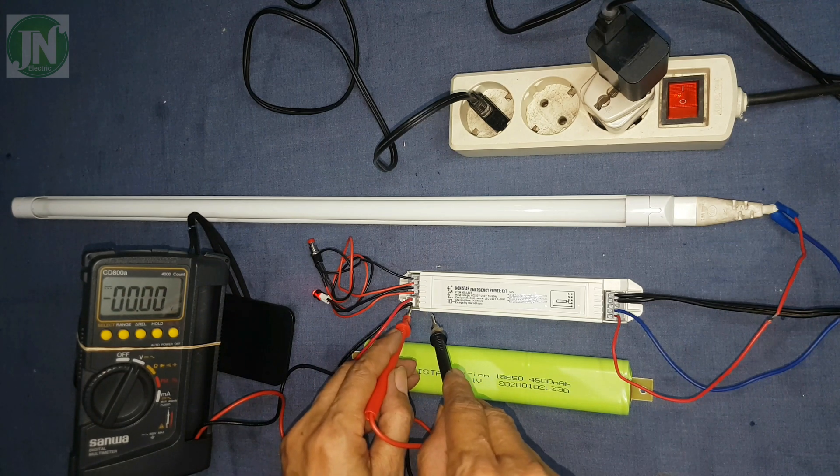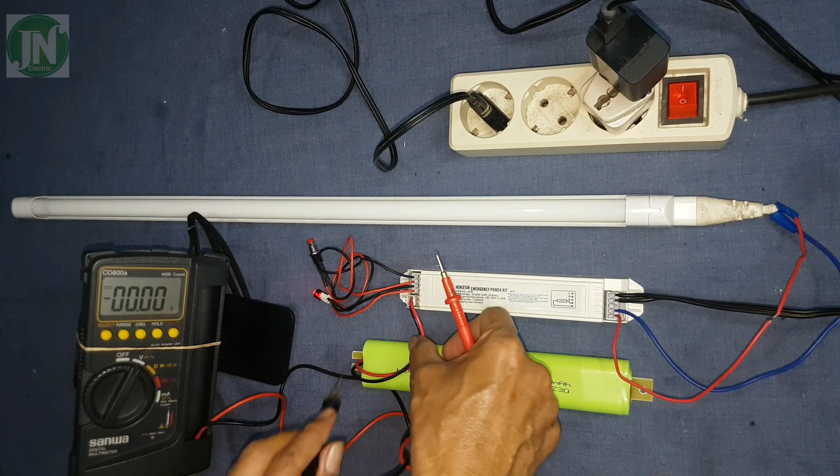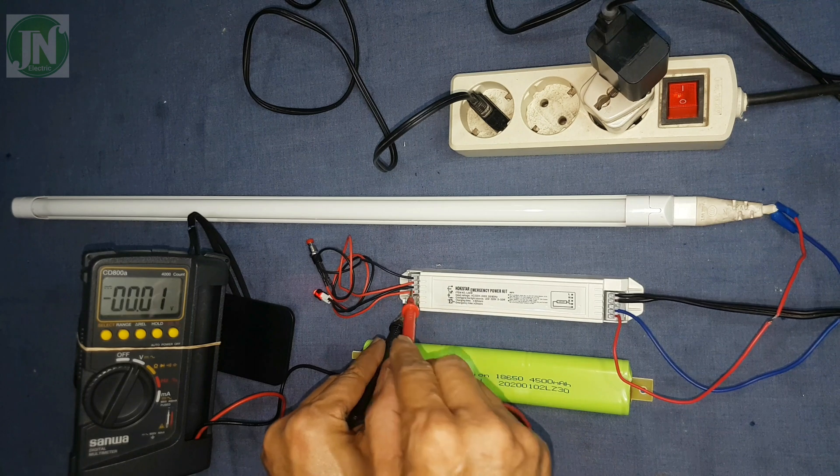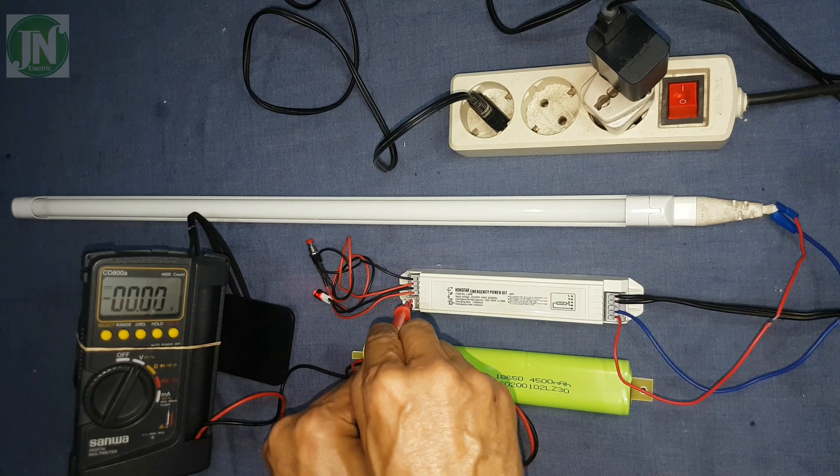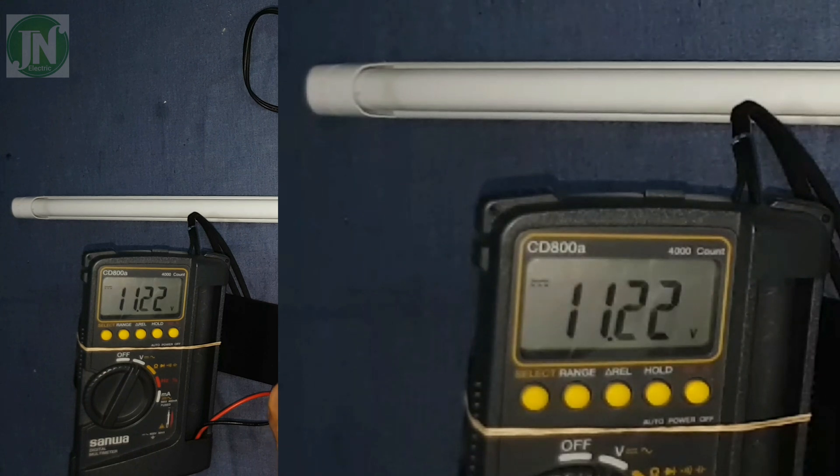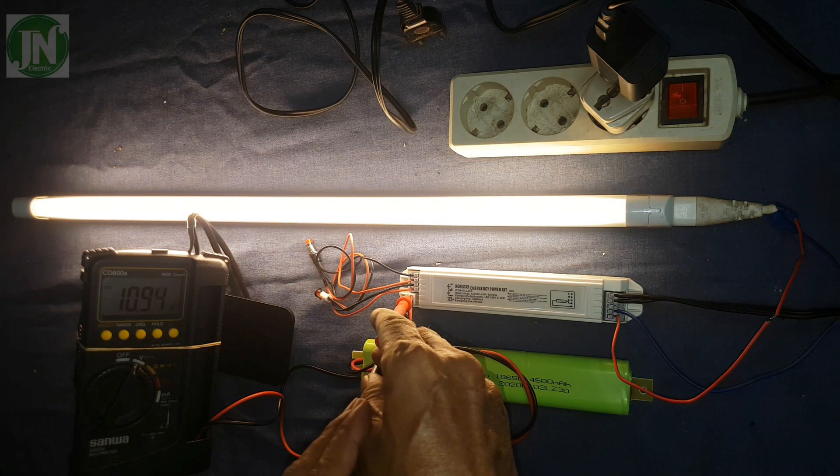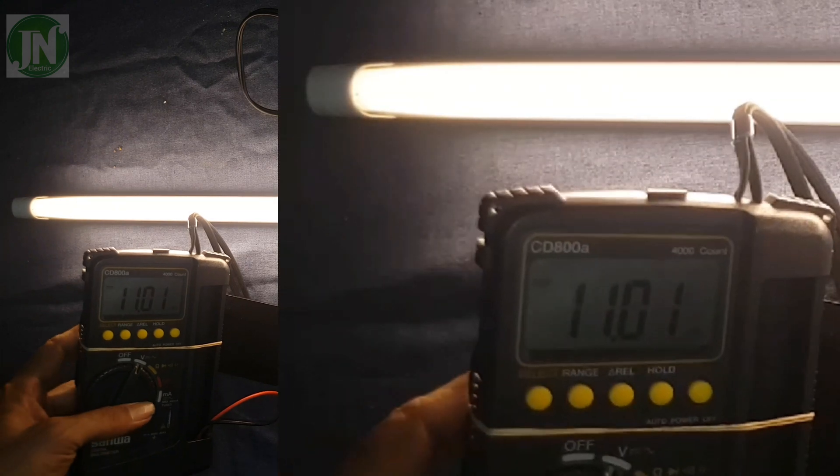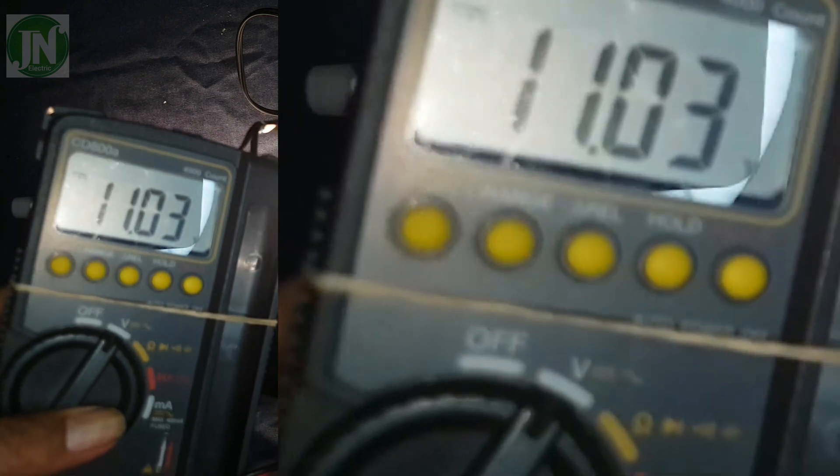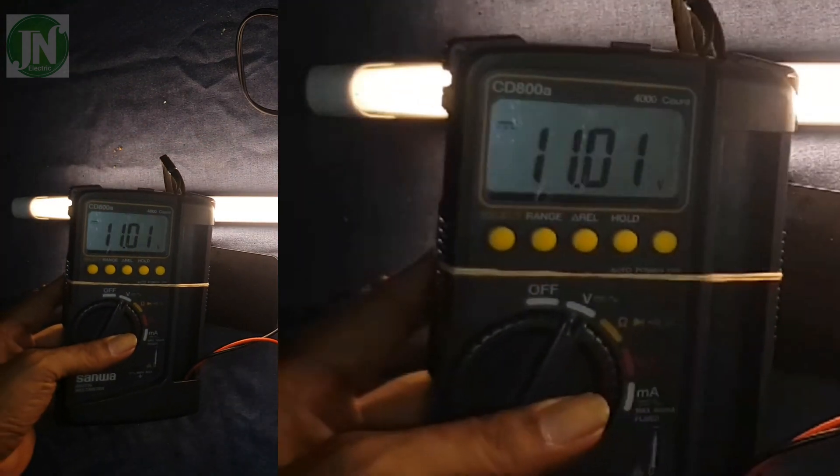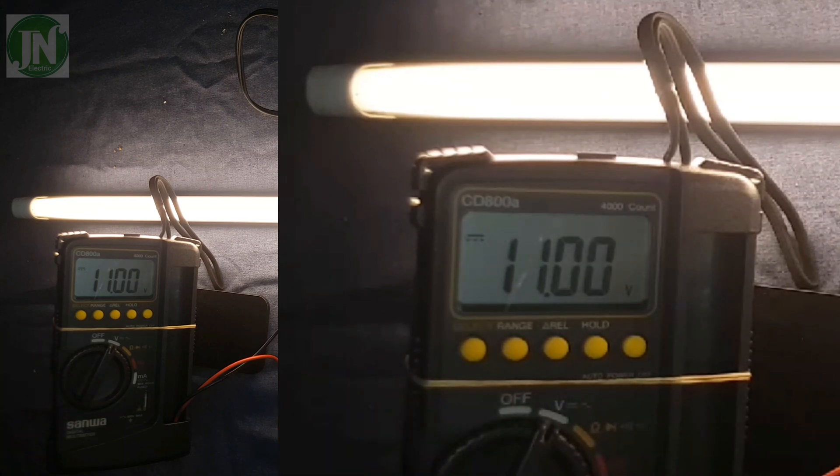Now we will measure the battery voltage: 11.28 volts. Then we measure the DC voltage when the light is on: 11.02 volts DC.